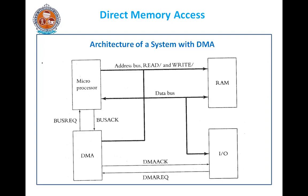The bus is given to the DMA. The DMA circuitry places the address into which the data is to be written on the address bus. The DMA now puts the address and then asserts the DMA acknowledgement signal. Once the DMA acknowledgement signal is asserted, it asserts the write signal to the RAM.